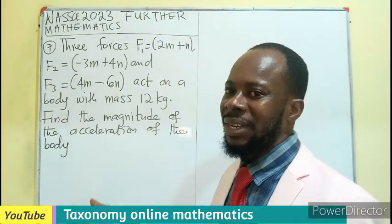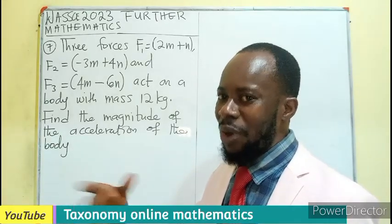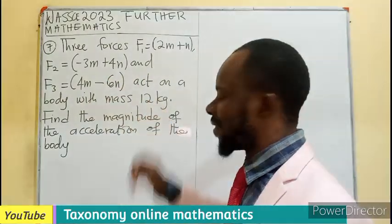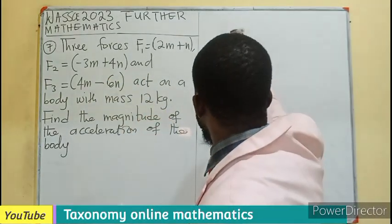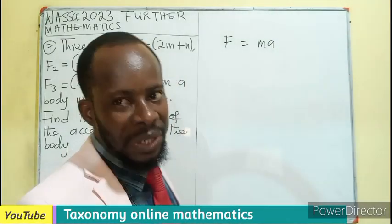How do you find acceleration? Acceleration is going to be in connection with force and mass. So the force is there, the mass is given. I know that force is equal to the mass of the body times the acceleration.